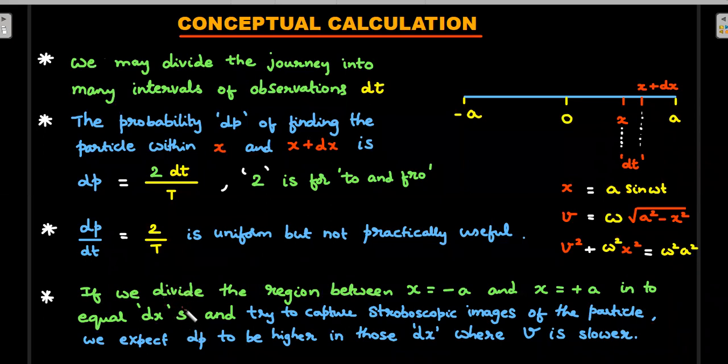Let me read out the last line that I try to talk about before I show you the stroboscopic photograph. If we divide the region between x equals minus a to x equals plus a into equal dx's and try to capture stroboscopic images—that means you switch on and off the light and take the snapshots of the particle in equal intervals—we expect the dp presence, that is the presence of particle or probability of locating particle, to be higher in those dx windows where the particle goes slower so that you can capture them. So with that understanding, if we move forward.